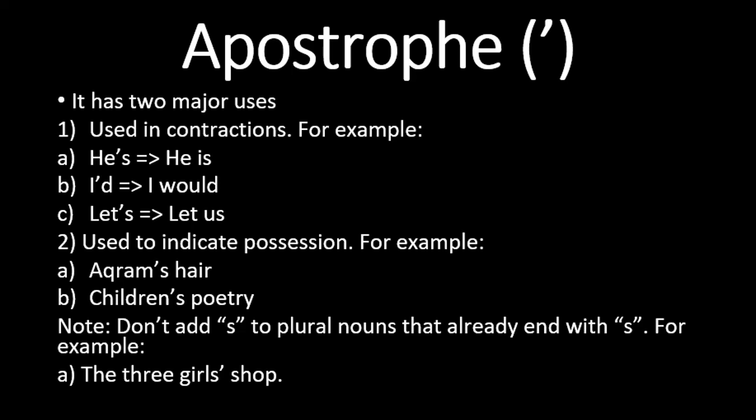The second use of apostrophe is to indicate possession — meaning ownership or relationship. To show someone's ownership we use this punctuation. For example, 'Akram's hair' — we can write 'hair of Akram' or 'Akram's hair' to show Akram's possession.